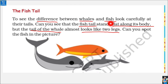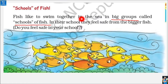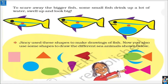Have you ever observed the tail of a fish? To see the difference between whales and fish, look carefully at their tails. A fish's tail is flat along its body, while a whale's tail extends out like two legs from the body. Do you know that a group of big fish is also called a school of fish? Small fish, just like small children, travel in groups — so they look like one big fish and can scare away bigger fishes. Some fish also puff up with water to appear bigger and scare away predators.